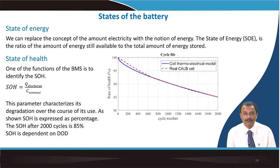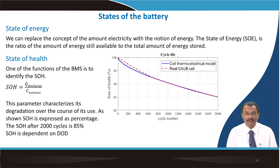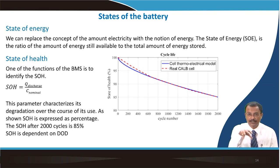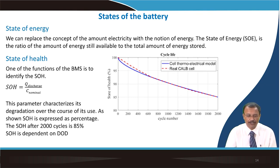State of energy is also important — we can replace the concept of the amount of electricity with the notion of energy. The state of energy is the ratio of the energy still available within the cell to the total energy stored. State of health (SOH) is another critical measure that the battery management system tracks for each cell, defined as the discharge capacity ratio with respect to the nominal capacity of the battery.